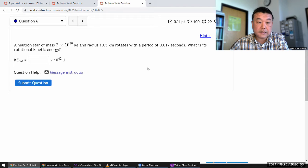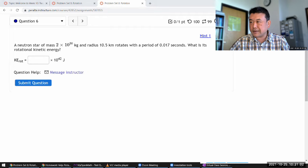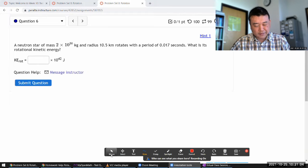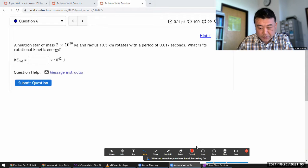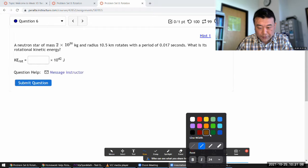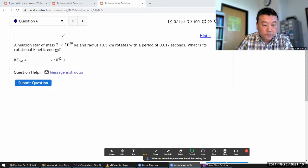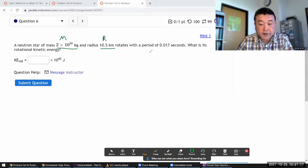So it says a neutron star of some mass, let me write down, give it a symbol so that I can write down an algebraic expression that has some concrete meaning of some mass and some radius r, rotates with a period of this many seconds. Yeah, let me label it as T for now.